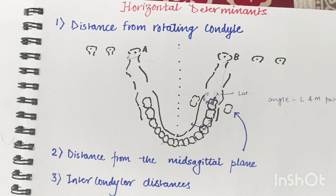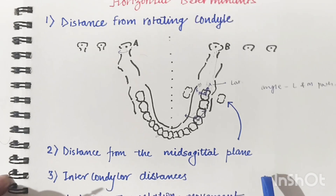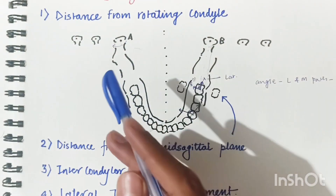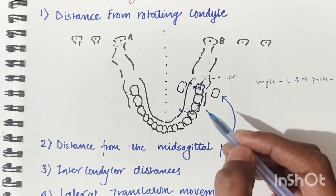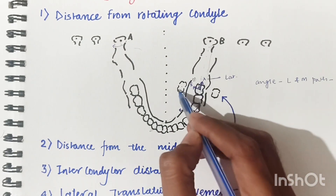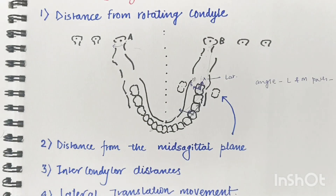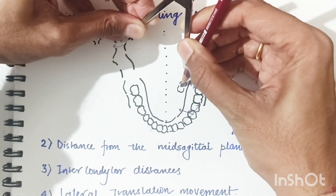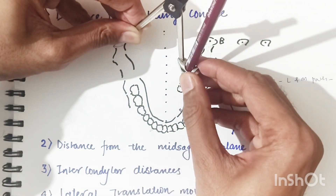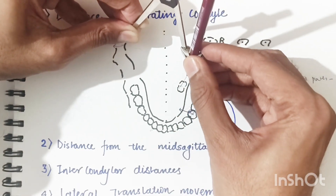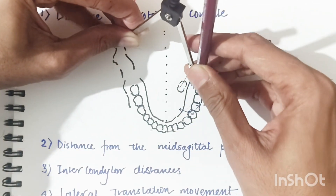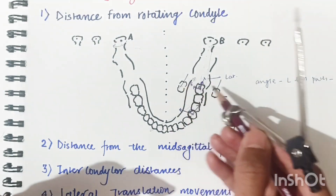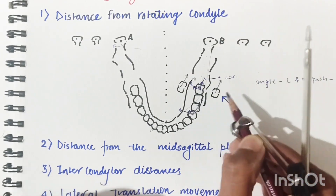The second horizontal determinant is the distance from the mid-sagittal plane. With three different molar positions at increasing distances from the mid-sagittal plane, as the mandible moves, each molar traces a mediotrusive path and a lateral trusive path. The paths are different for each position.